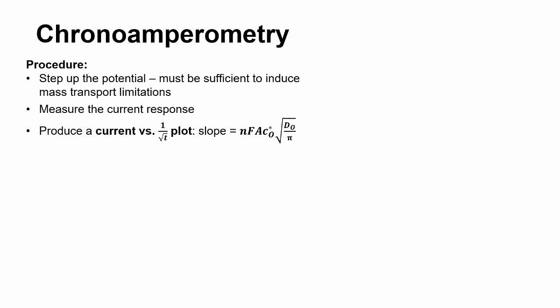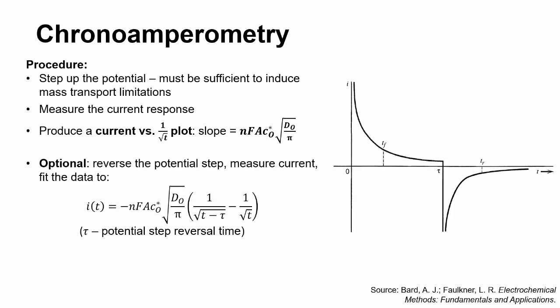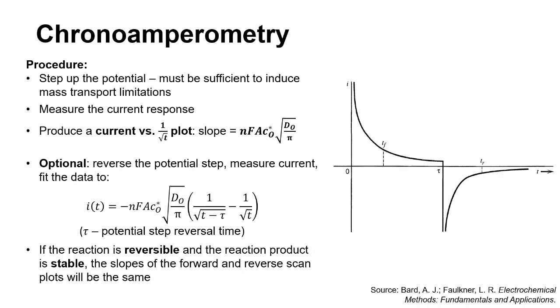To this end, the potential step must be large enough to create a diffusion-limited current. Also, if the potential step, and therefore current, are reversed during the experiment, the reverse scan plot can tell us about the reversibility of the reaction and the stability of the reaction product. If the reaction is reversible and the reaction product is stable, the linearized plots of the forward and reverse scans will have the same slope.